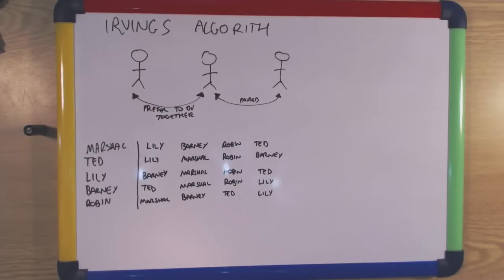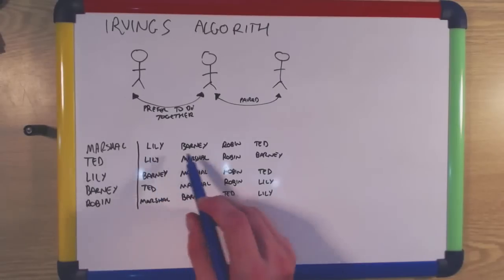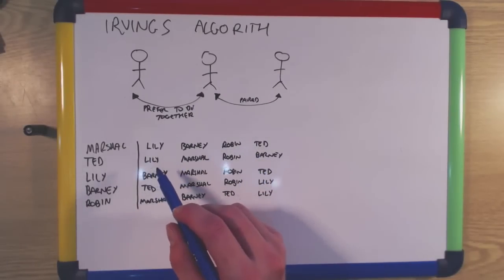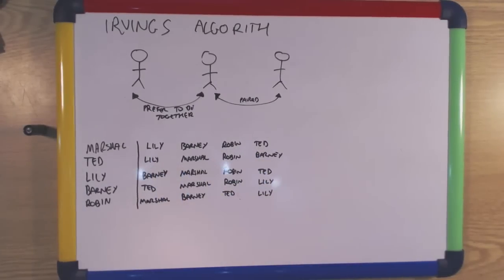Today we're going to present Irving's algorithm, which solves the stable roommates problem if there is a solution. The problem is the task of trying to match up a set of people into pairs where each person has an ordered list of preferences of the people they'd like to be roommates with. First we will present an example of the algorithm working on a sample problem, then we will move on to an example where the algorithm fails and no solution exists.